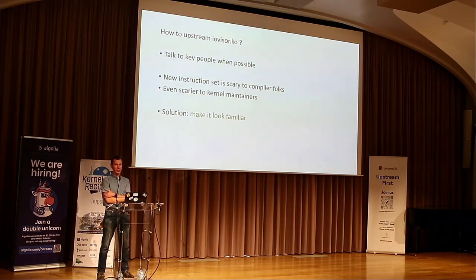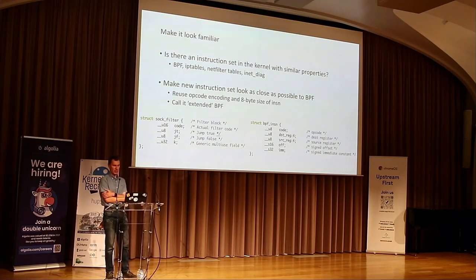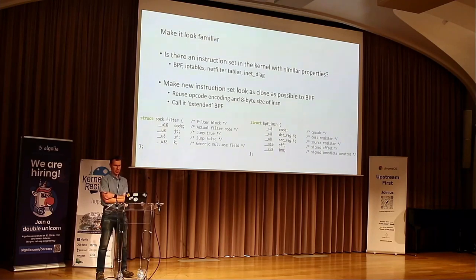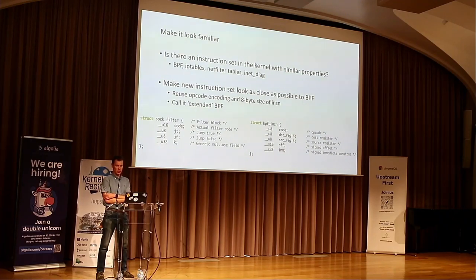So then we deployed this strategy: if something looks crazy, make it look familiar. That's a very important point. So how can we make this new instruction set look familiar? We started looking at what's already there in the kernel — back then it was classic BPF, iptables kind of instruction sets. Out of all the possibilities, BPF looked closest to the instruction set we had.